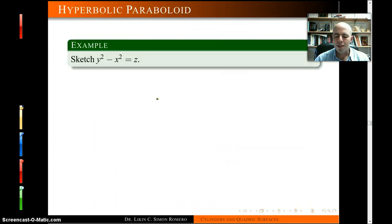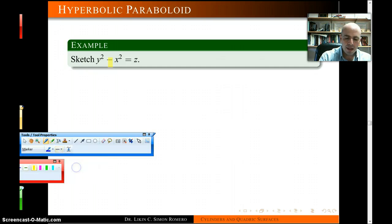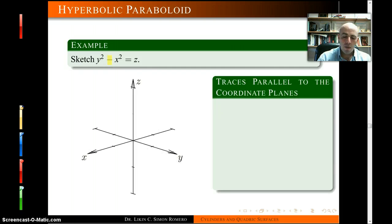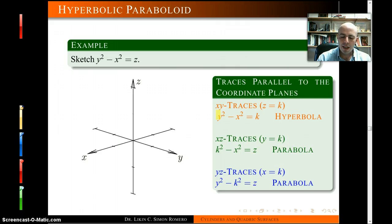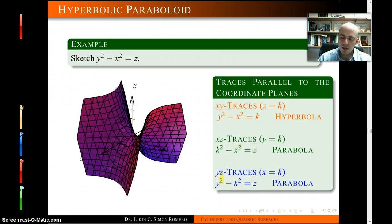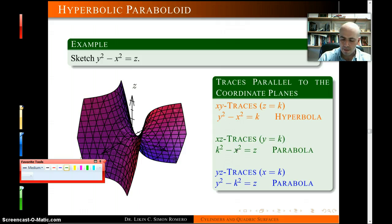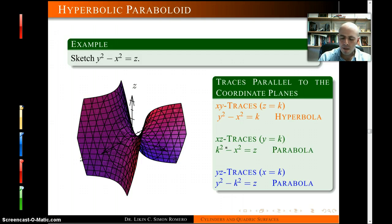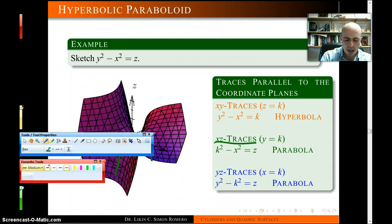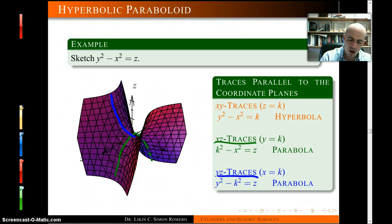The hyperbolic paraboloid has a similar setup but with a minus sign. That minus creates two things: we still have parabolas, but the other trace becomes a hyperbola — hence the name hyperbolic paraboloid. You have a hyperbola in one trace, and two parabolas: one opening towards the negative z-axis because of the minus, and the other opening towards the positive z-axis. The xz traces give parabolas opening downward, the yz traces give parabolas opening upward, and together they create a saddle shape.